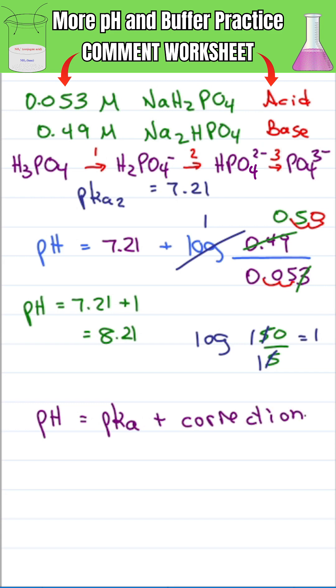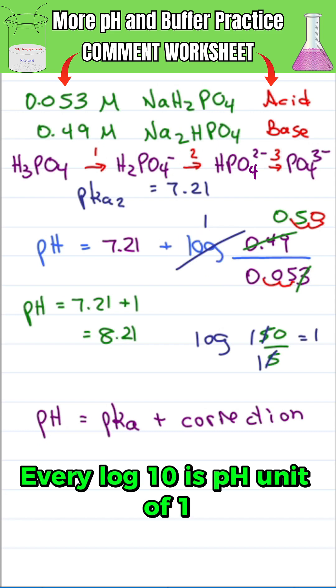That correction factor looks at the impact of the conjugate base to acid ratio. Since the correction factor has to do with logs of base 10, every log 10 is a pH unit of 1.